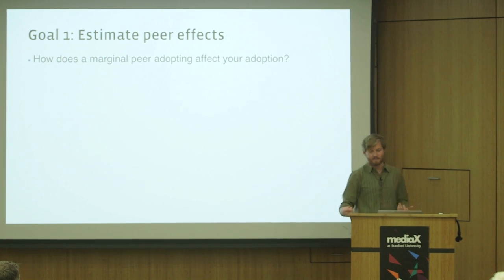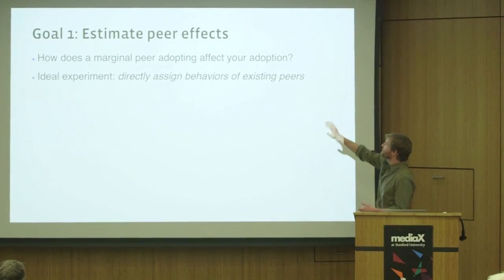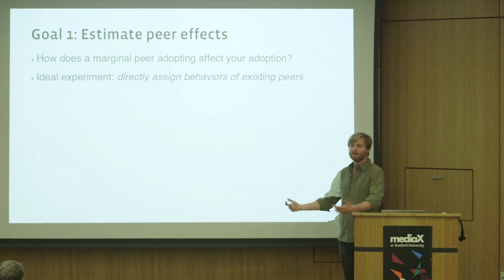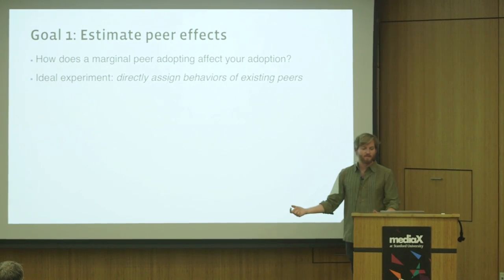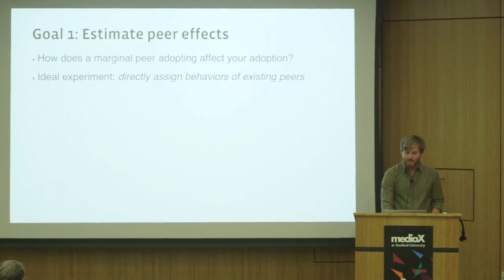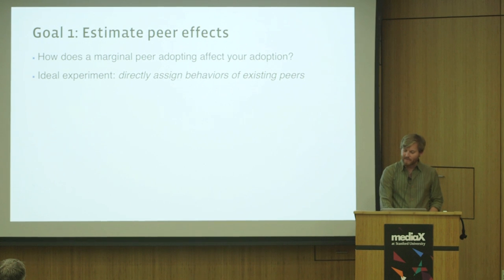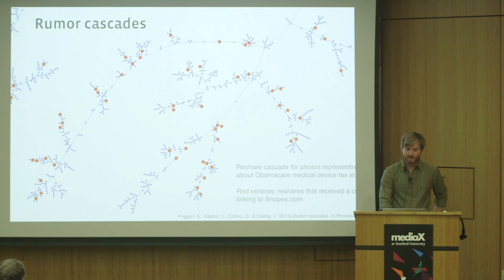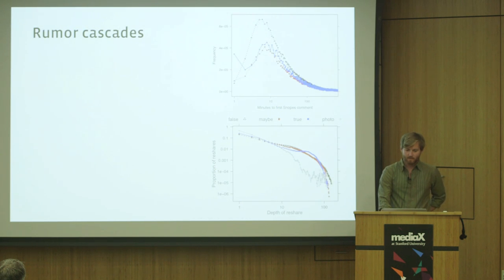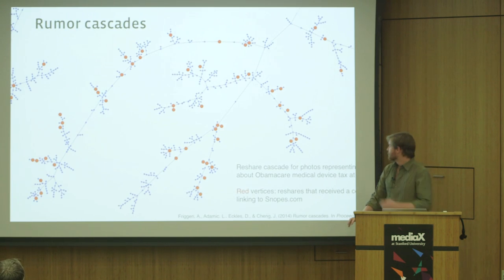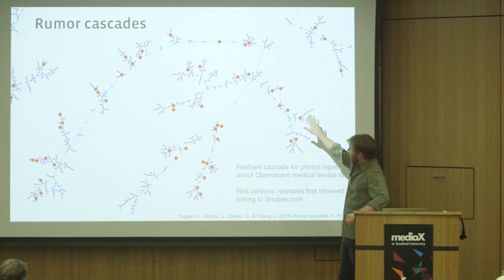The ideal experiment is something like directly assigning your peers to engage in some behavior, and that's sometimes what we're able to do. Even when you can't run the ideal experiment, it's often really useful to think about what that would be. I want to give an example of something that can diffuse on Facebook that's kind of interesting.